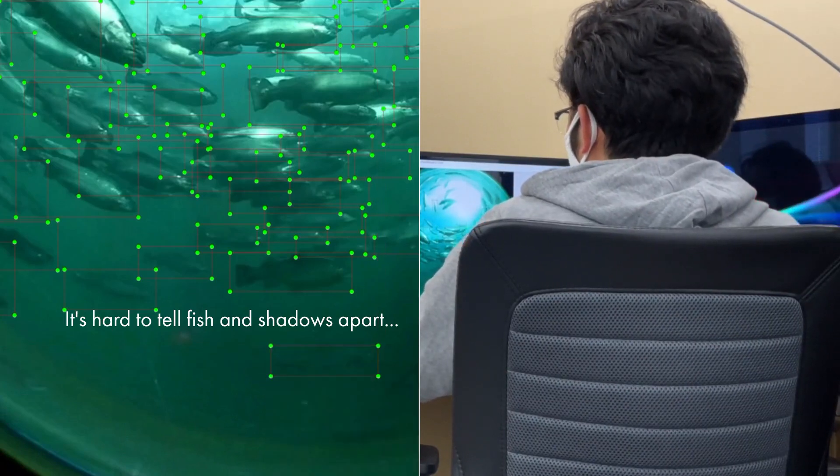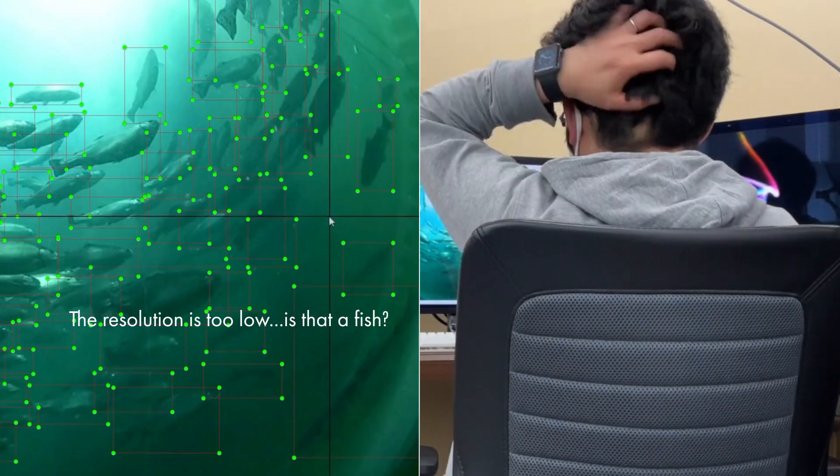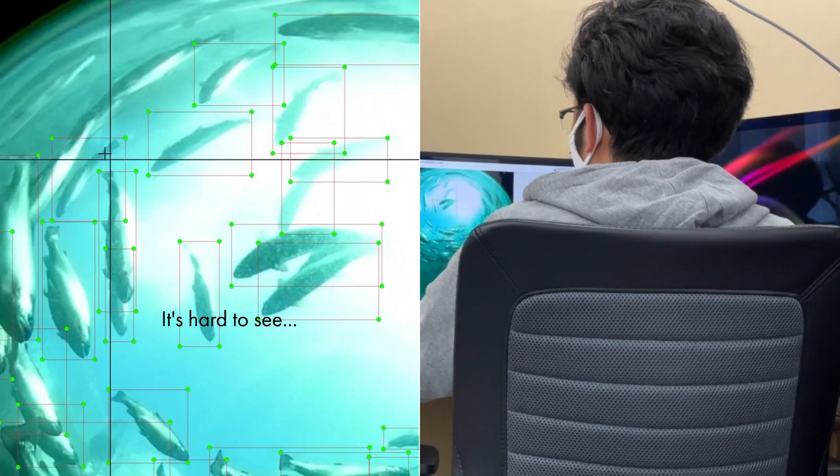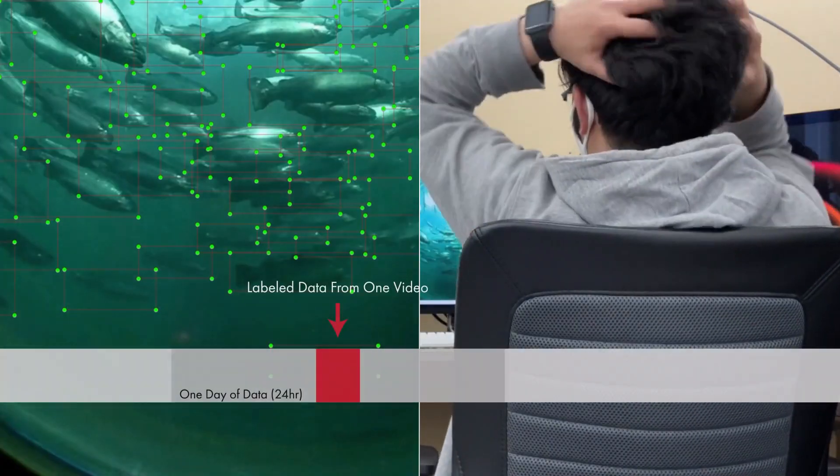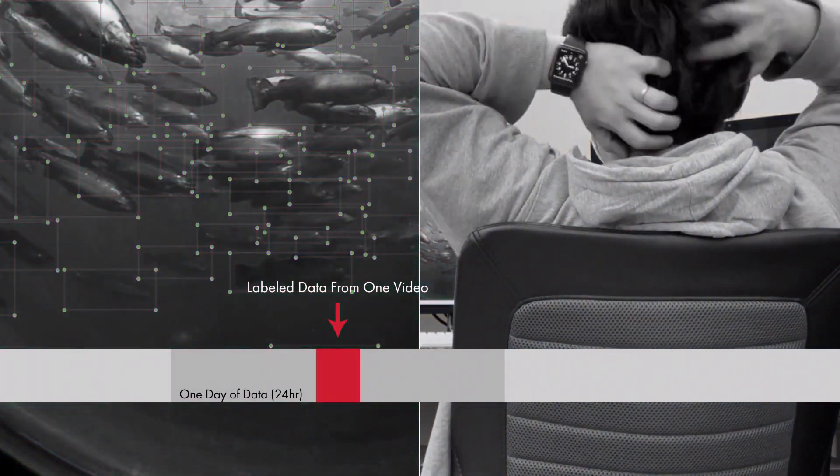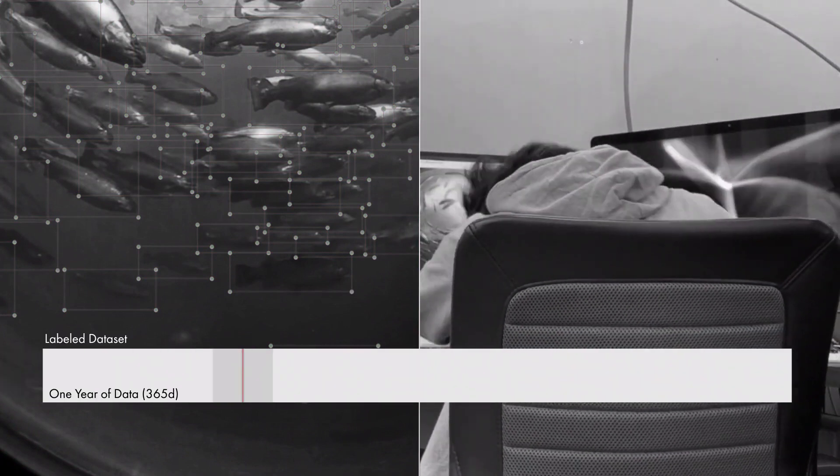Fish and shadows can be hard to distinguish. Low resolution can make fish hard to see, and bright lights can partially obscure fish. What's more, the data you've worked so hard to label is only a fraction of the data required for computer vision training.